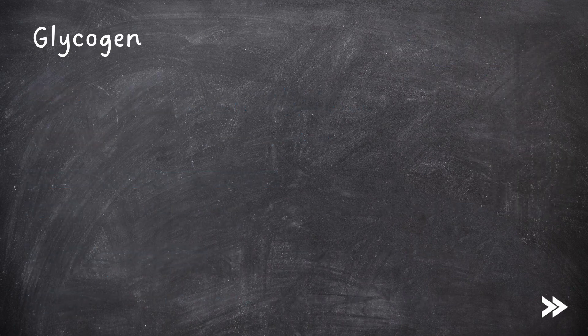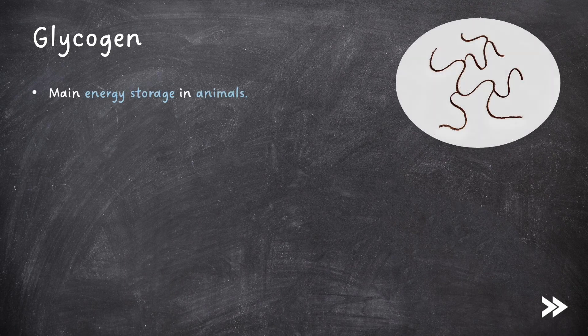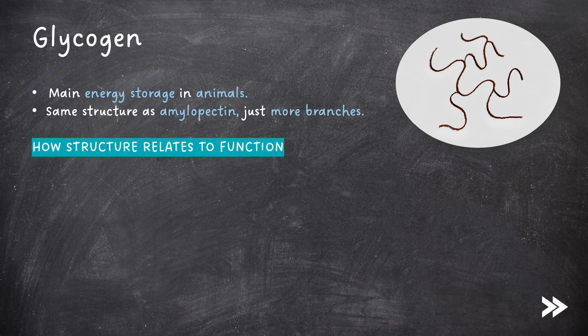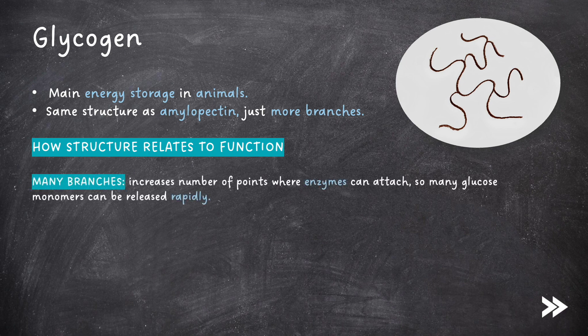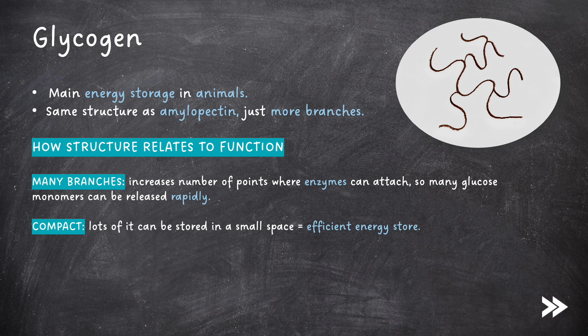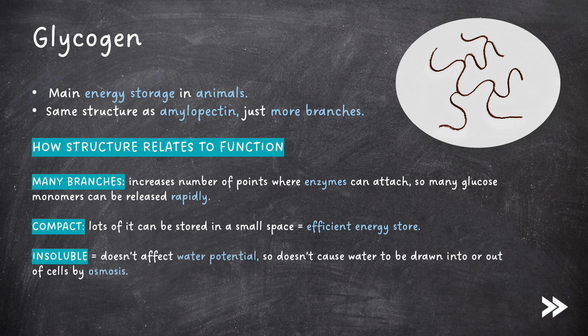Next we have glycogen. This is the main energy storage in animals. Its structure is the same as amylopectin, just with more branches. Glycogen has many branches, increasing the number of points where enzymes can attach, so many glucose monomers can be released rapidly. It is also compact, so lots of it can be stored in a small space, making it an efficient energy store. Like starch, it is insoluble, so it doesn't affect water potential, and doesn't cause water to be drawn into or out of cells by osmosis.